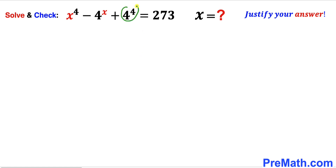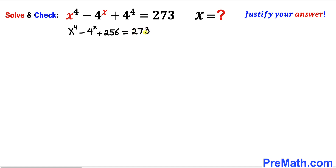Let's focus on this 4 power 4. That is going to be equal to 256. So therefore we can write this equation as x power 4 minus 4 power x plus 256 equals to 273. Now we are going to subtract 256 from both sides. So therefore we are ended up with x power 4 minus 4 power x equals to 17 on the right hand side.